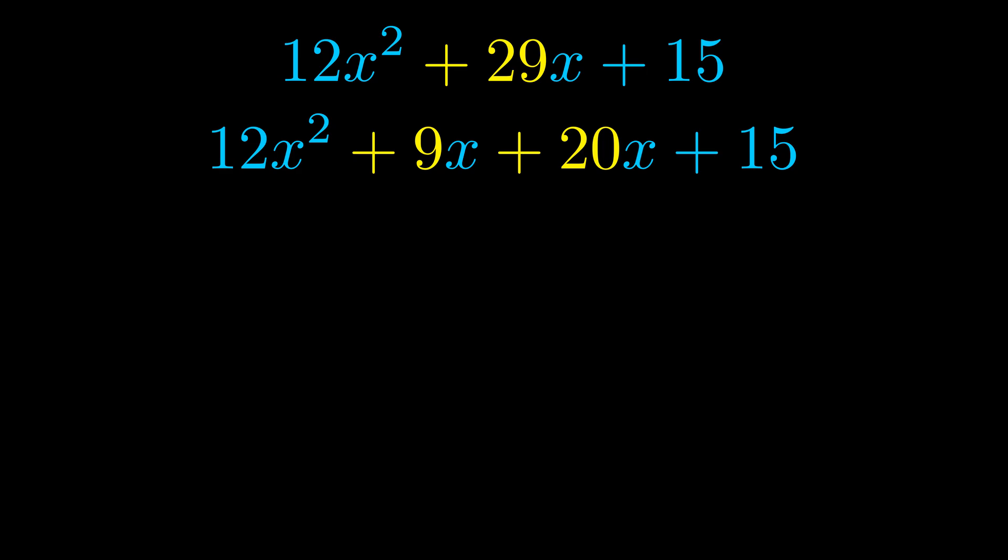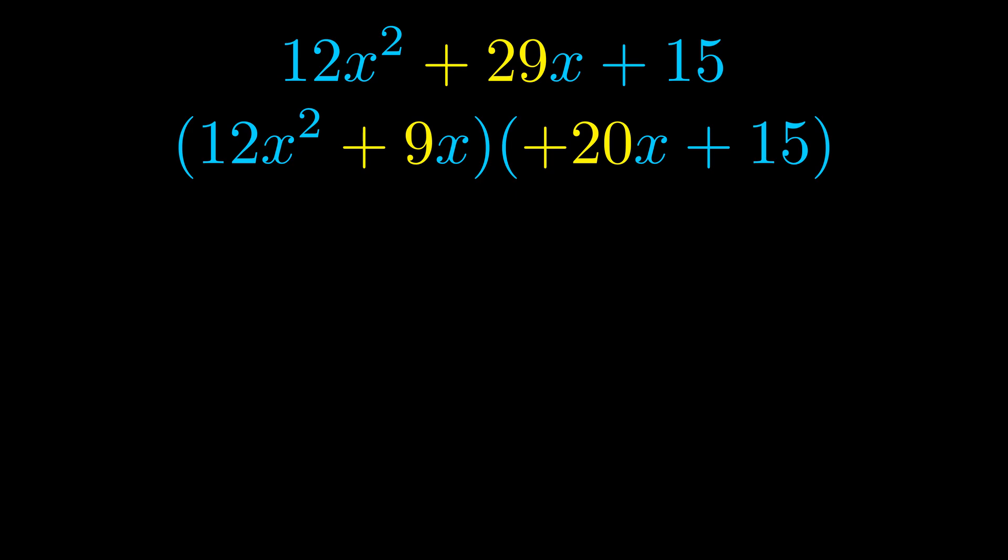Once we've done this, we go ahead and we put parentheses around the first term and the last term. And we do that so that we can take the greatest common factor out of both terms. We can see the greatest common factor is now outside in green.